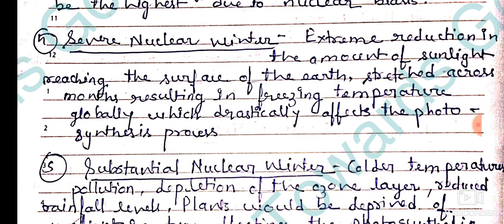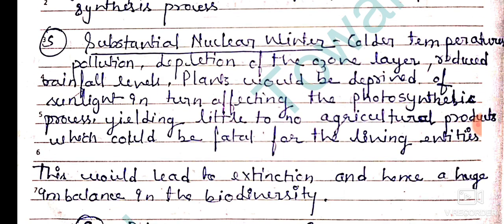The fourth type is severe nuclear winter. This involves an extreme reduction in the amount of sunlight reaching the surface of the earth, stretched across months, resulting in freezing temperatures globally, which drastically affects the photosynthesis process.